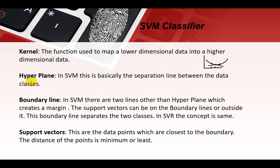Next, hyperplane. In Support Vector Machine, this is basically the separation line between the data classes. The two classes are separated, which we call the hyperplane. In Support Vector Machine, there are two lines other than the hyperplane. These two lines create a margin. The support vector can be on the boundary line, and our vector can be close to the boundary line. These boundary lines separate the two classes. In SVR, the concept is the same.